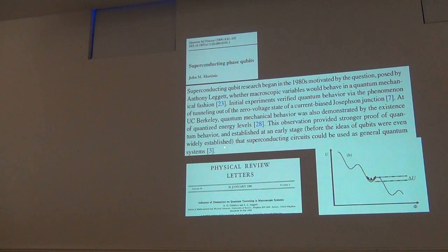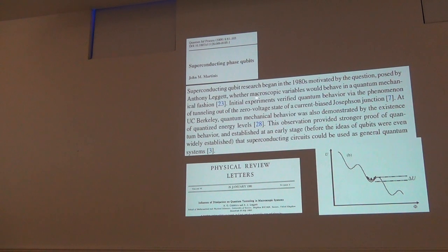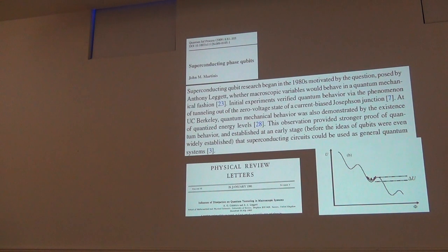Superconducting qubit research began in the 80s — I took this from John Martinis' review — and a lot of things started very far in the past, as Dimitri also mentioned yesterday. The key point was whether macroscopic variables would behave in a quantum mechanical fashion. This was demonstrated by the John Clark group at that time, with Devoret and Martinis. We will go through these experiments and do more recent updates, in a strong material science environment.